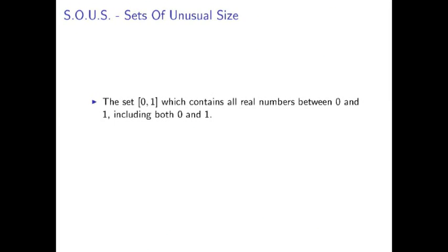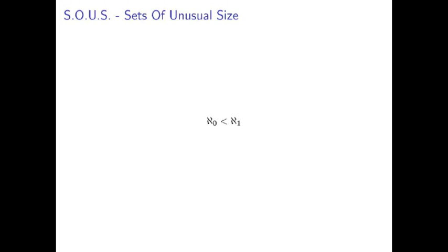We also considered the size of the set of all real numbers. Well, actually we only considered the size of the set of all real numbers between 0 and 1. We showed that this was a different, larger infinity than aleph-not. We call this infinity aleph-1. And we can proceed in this manner and find even larger sets, with cardinalities that we label aleph-2 and aleph-3 and so on.